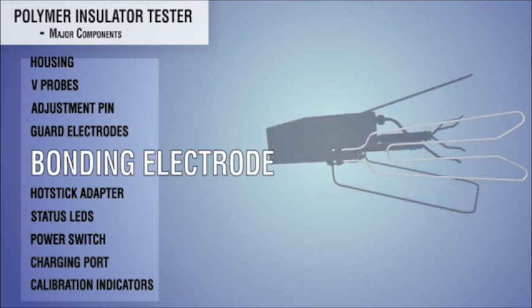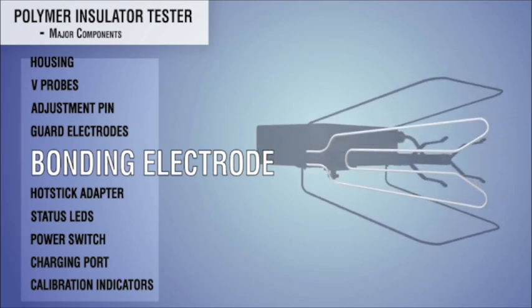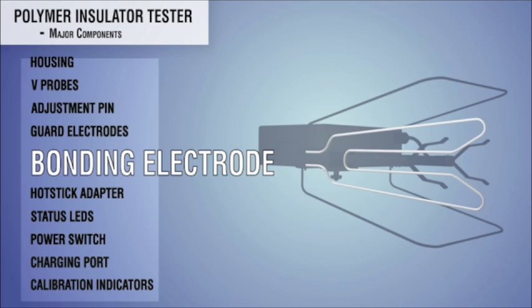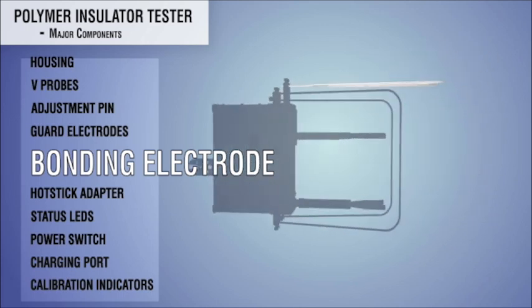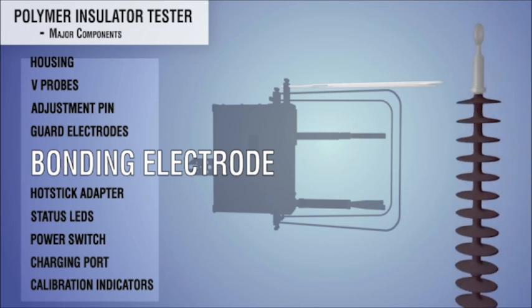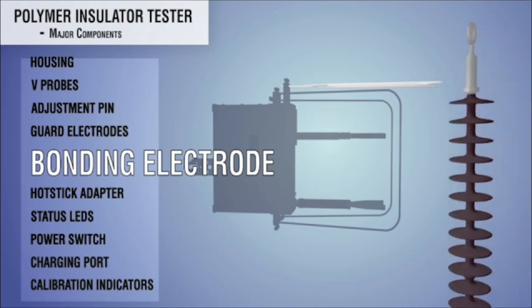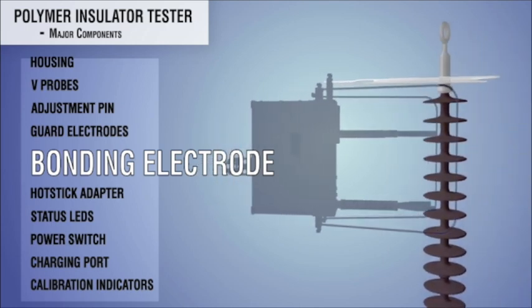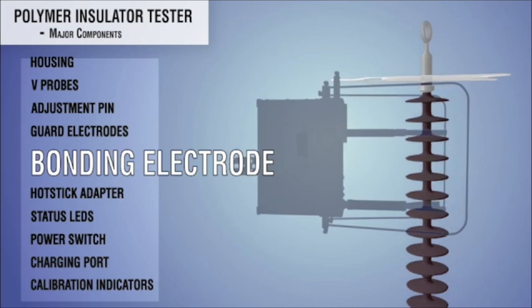Bonding electrode: A tuning fork-shaped electrode is attached to the housing closest to the grounded V-probe. When making a measurement close to insulator end fittings or corona rings, the bonding electrode is brought in contact with these metallic objects to prevent arcing.